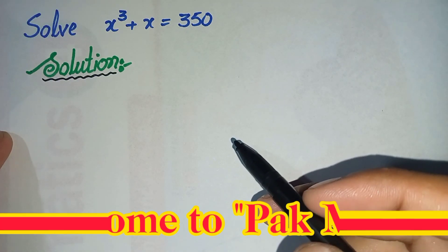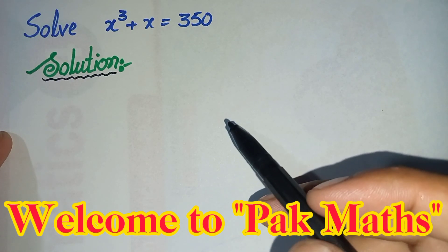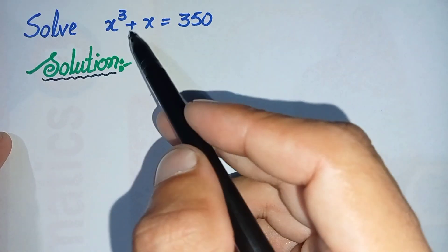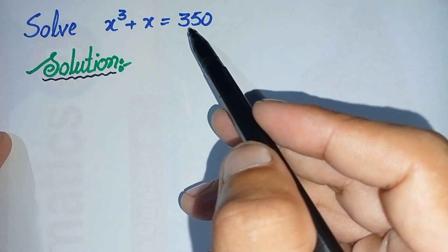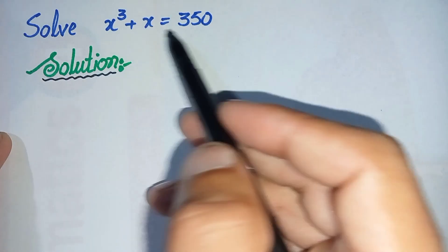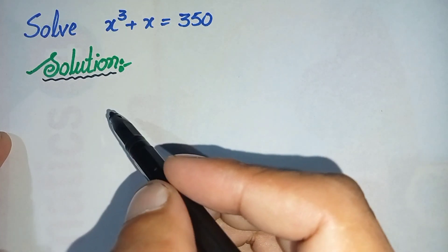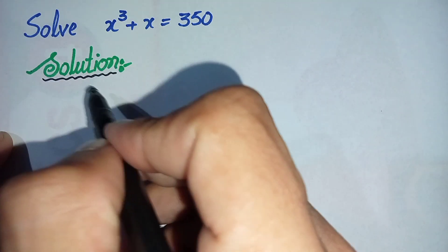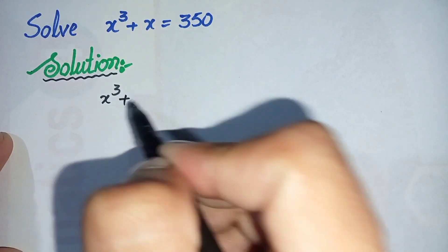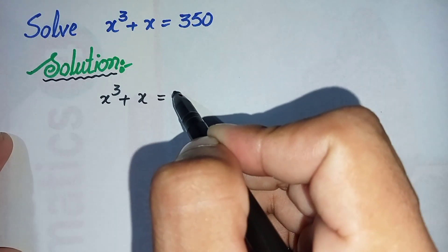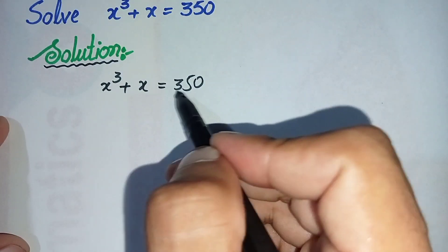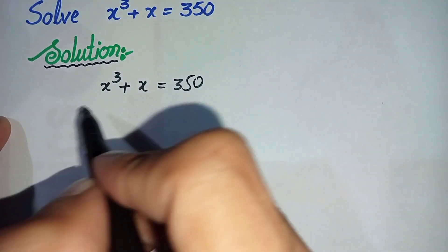Hello everyone, welcome to ParkMas. In this video I am going to solve this cubic equation, that is x³ + x = 350. We will write the solution and then we will write this question in the solution again and try to solve it. The question is x³ + x = 350.